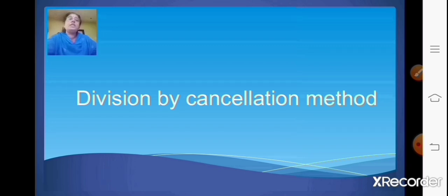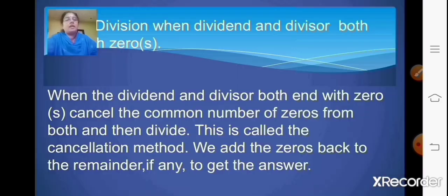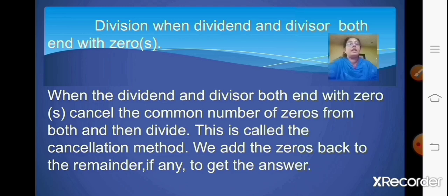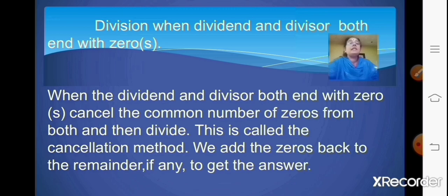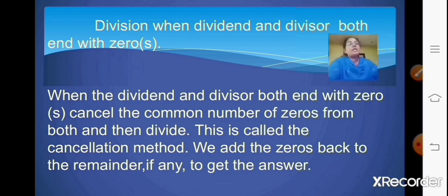Now when do we use this cancellation method? Division by cancellation method is done when the dividend and divisor both end with zeros. When the dividend and divisor both end with zero or zeros, cancel the common number of zeros from both and then divide. This is called the cancellation method. Afterwards, we add the zeros back to the remainder, if any, to get the answer. So let us see some example sums.